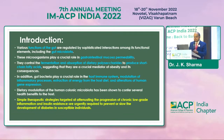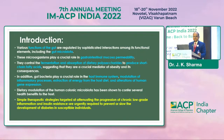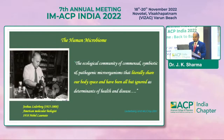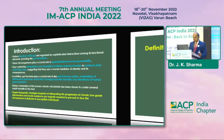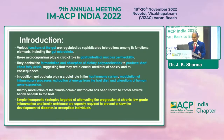The various functions of the gut are regulated by sophisticated interactions among the functional elements including the gut microbiota. These microorganisms play a crucial role in gastrointestinal mucosal permeability — the mucosa permeability is the crux here. They control the fermentation and absorption of dietary polysaccharides to produce short chain fatty acids. In addition, they play a crucial role in the host immune system, modulation of inflammatory processes, extraction of energy from the host diet, and alteration of human gene expression.